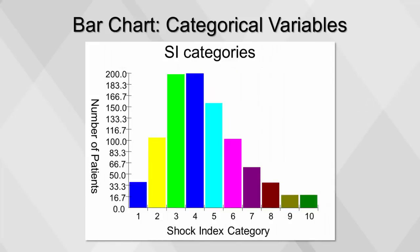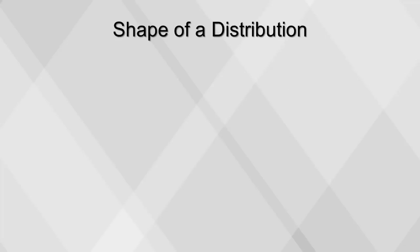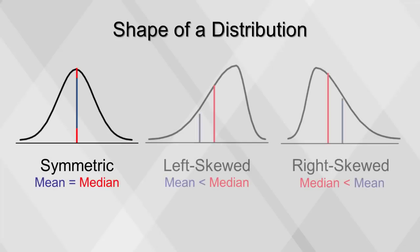This chart depicts shock index, which is the ratio of heart rate to blood pressure, and should lie between 0.5 and 0.8. The higher it is, the greater the risk. Shock index is an ordinal categorical variable. The vertical bars here represent the number of patients in each category. The shape of a distribution describes how the data are distributed; measures of shape include symmetric and skewed.